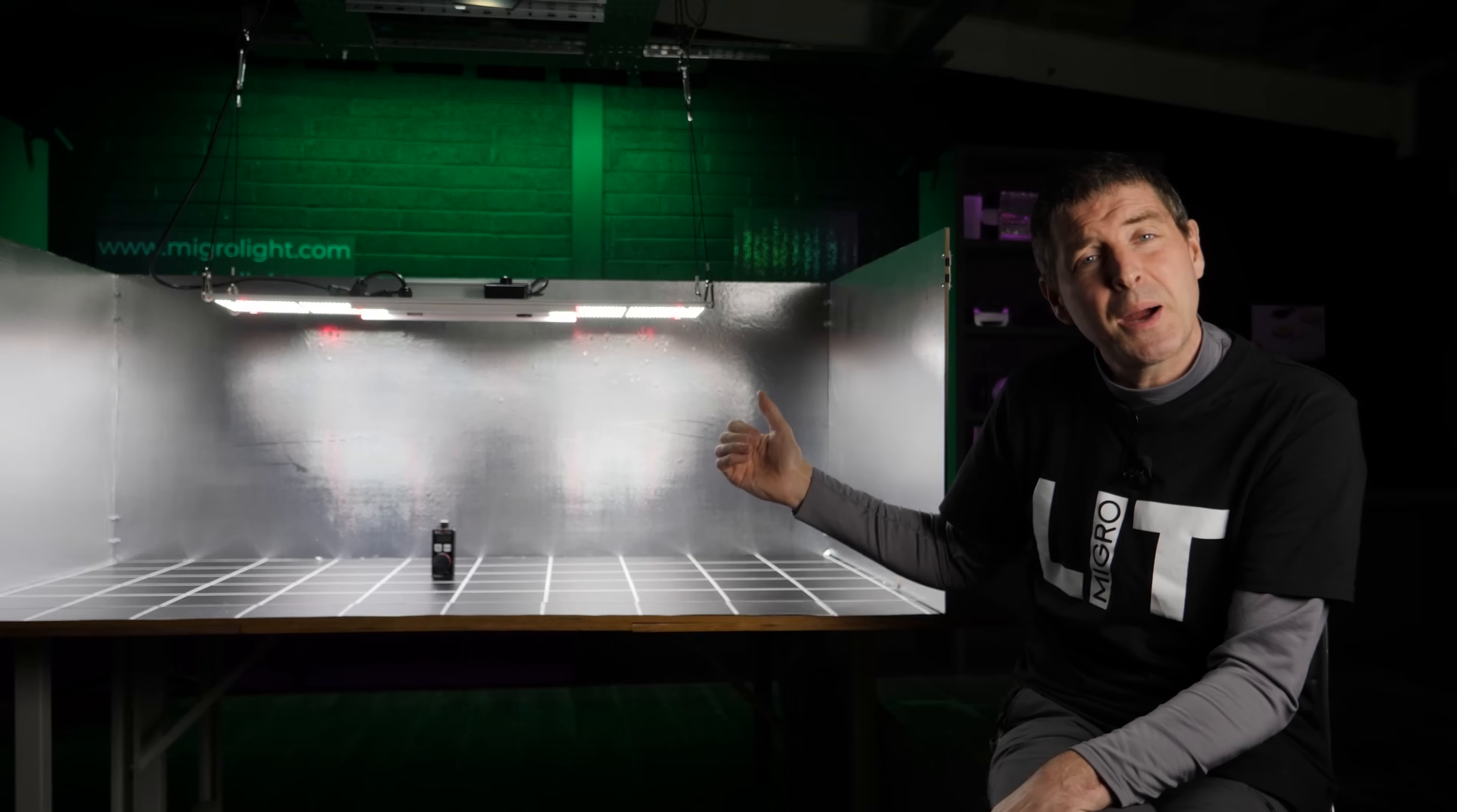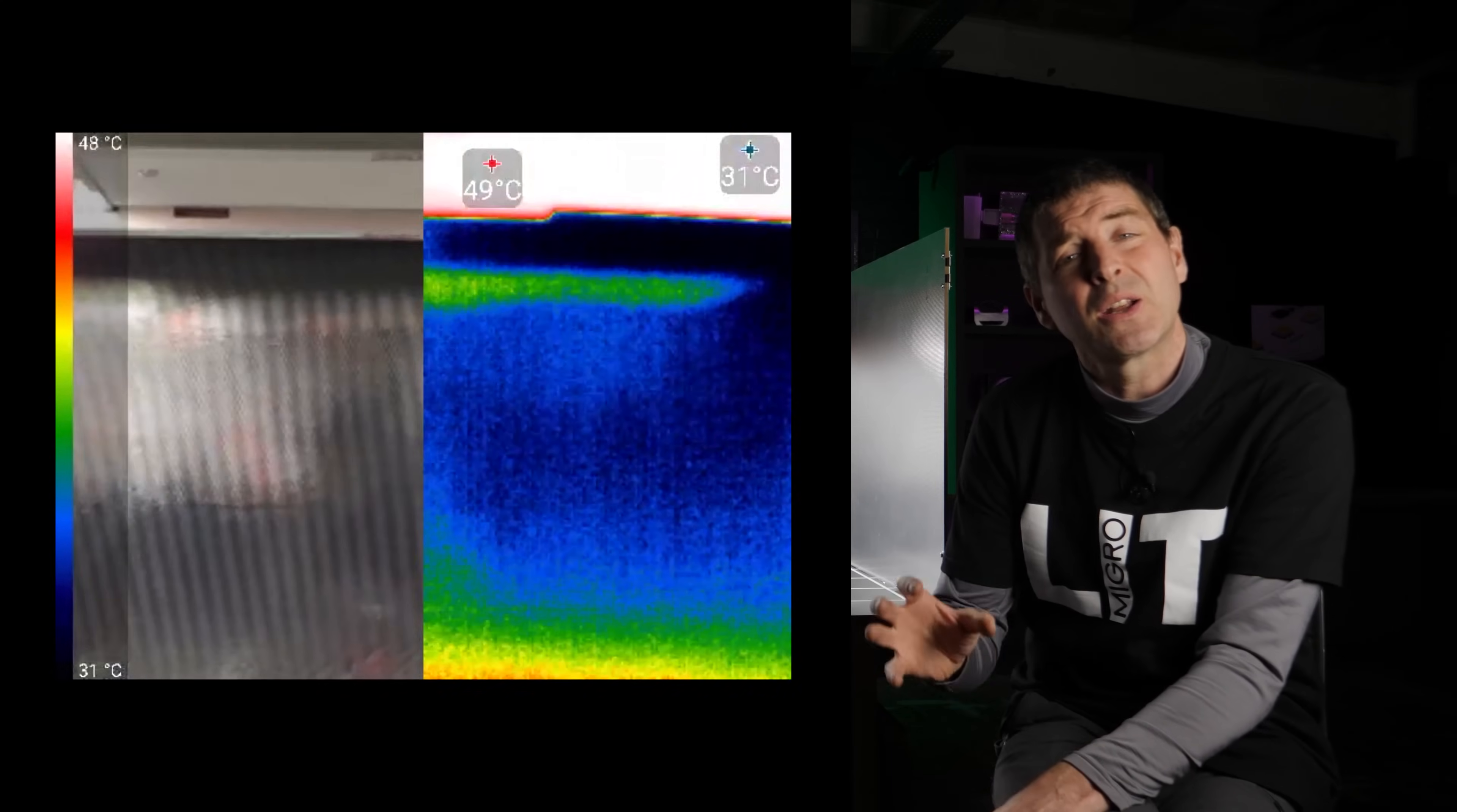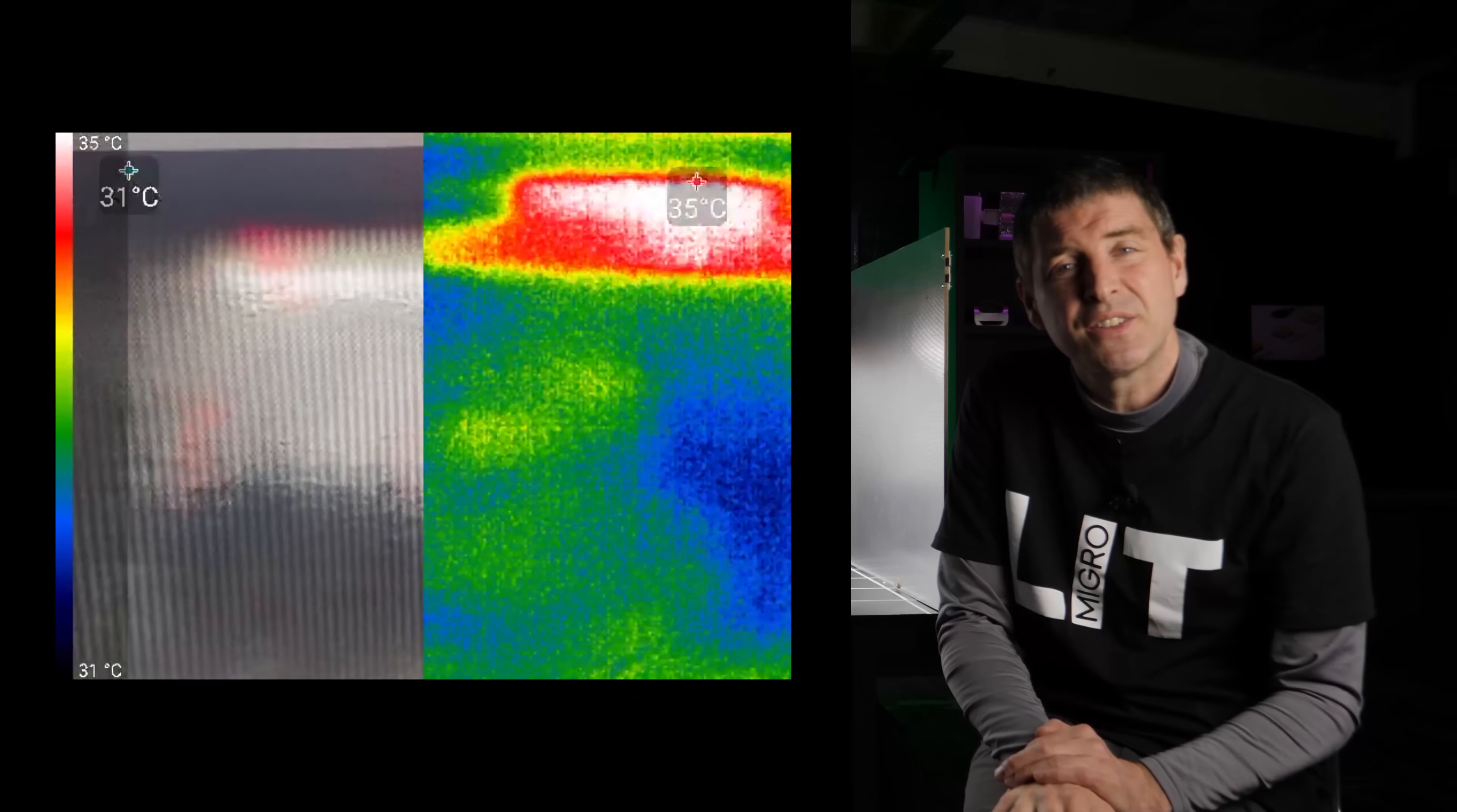To demonstrate this, I got the thermal camera out. You can see the area of the reflective walls adjacent to the light where the light intensity is highest. We're getting quite a lot of heat generated. In fact, that part of the reflective wall is four or five degrees centigrade higher than the other areas, showing quite a lot of light being converted into heat by reflectance losses.